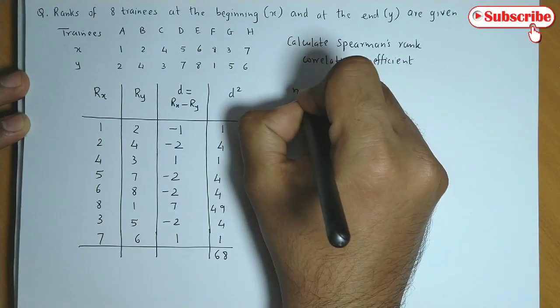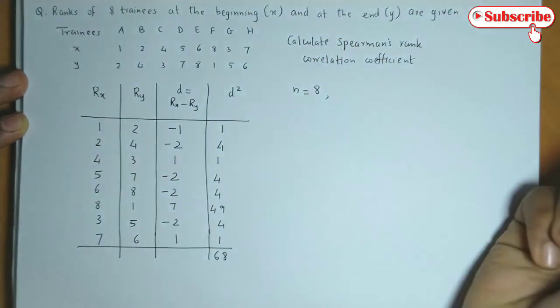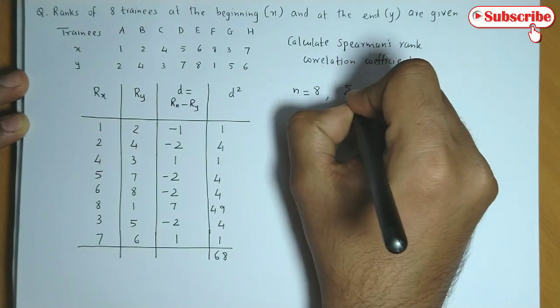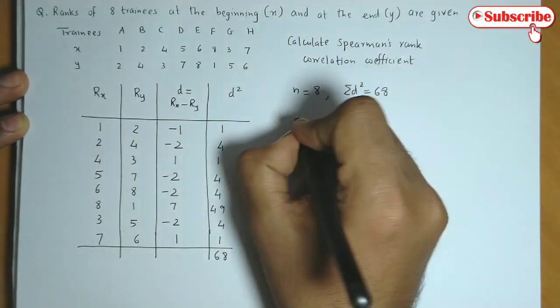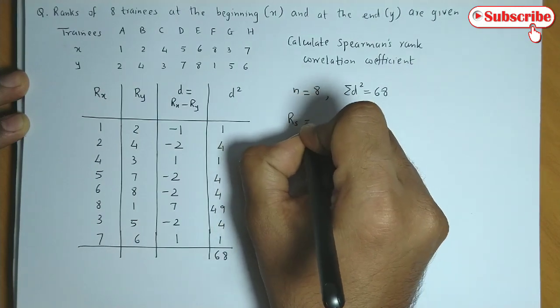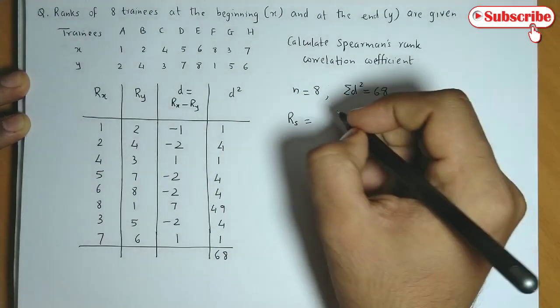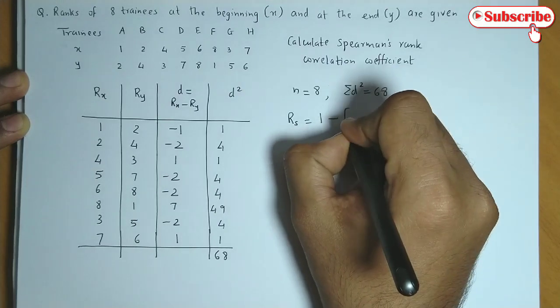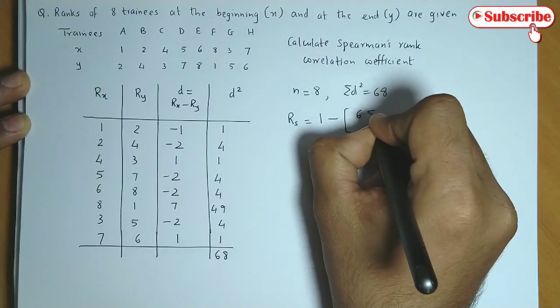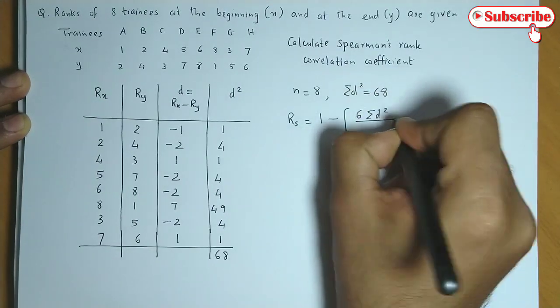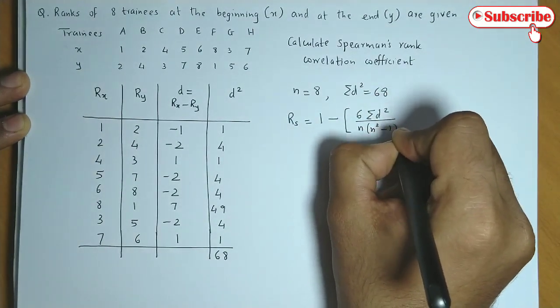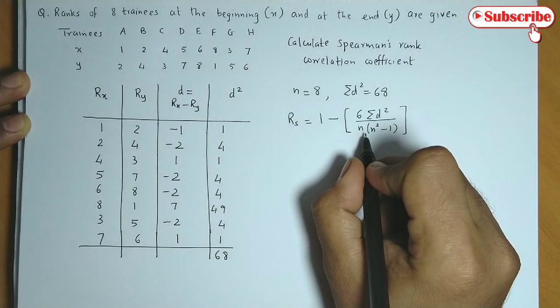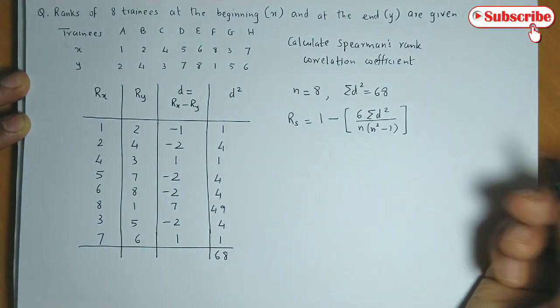So number of pairs of observations is 8. Then summation d square is 68. So now we calculate rs, that is Spearman's rank correlation coefficient as 1 minus 6 times summation of d square upon n into n square minus 1, or you could also write as n cube minus n.